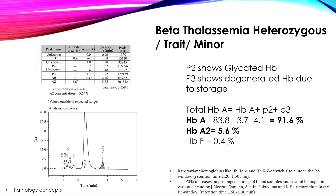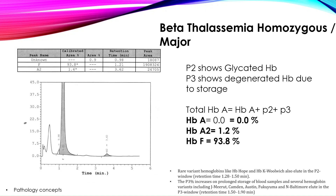Beta thalassemia heterozygous (trait or minor): HbA is 91.6%, HbA2 is 5.6% (more than 4%), and HbF is 0.4% — consistent with beta thalassemia trait or minor. In beta thalassemia major, the graph shows the majority as fetal hemoglobin: HbF is 93.8%, HbA is 0%, and HbA2 is 1.2%.